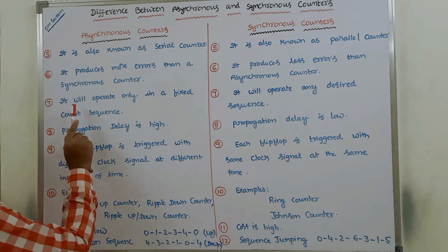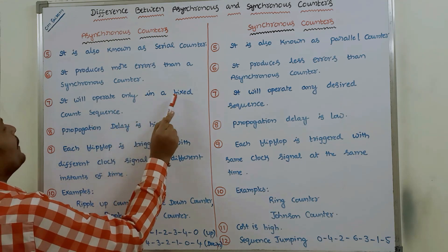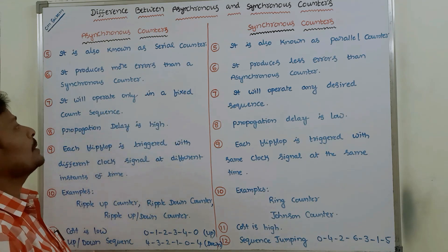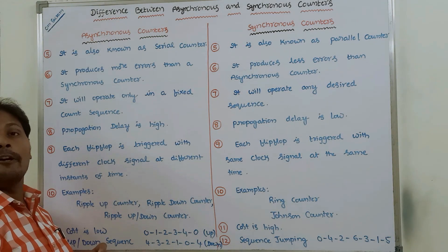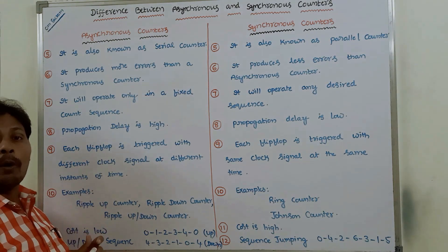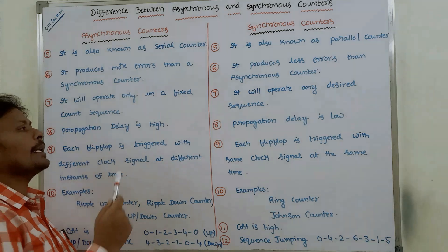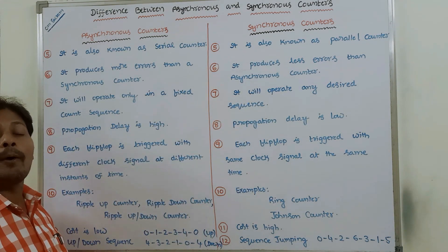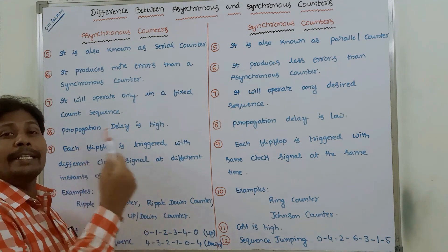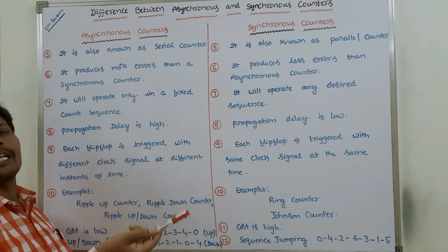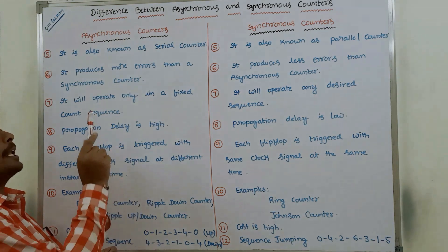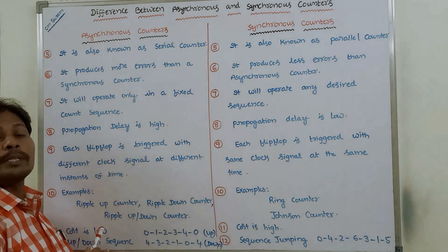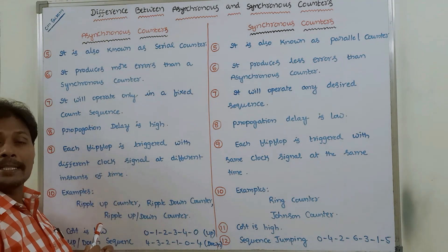Seventh point: asynchronous counters operate only in a fixed count sequence — that is, either an up counter or a down counter. Whereas in synchronous counters, any sequence can be implemented, including non-sequential ones, because asynchronous counters are limited to a fixed sequence only.